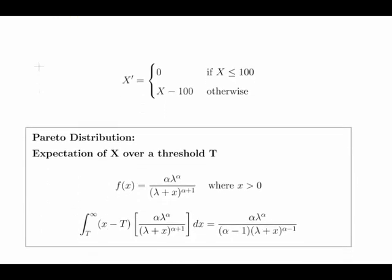So essentially what we're going to do now is say the expected value of threshold T. So essentially what we're doing here is introducing a policy excess. The insurer does not pay out unless the threshold is over 100.